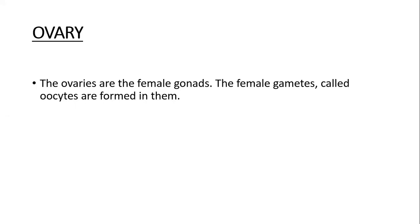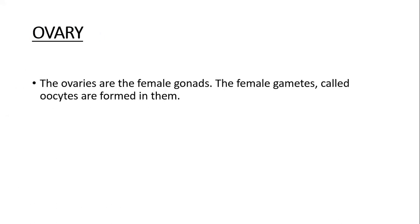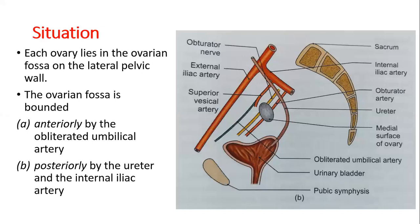The ovaries are the female gonads. The female gametes, called oocytes, are formed in the ovaries. Male gonads are the testes; female gonads are the ovaries. Each ovary lies in the ovarian fossa on the lateral pelvic wall. The ovarian fossa is a space bounded by specific structures.